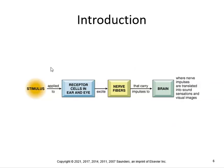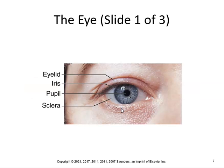Obviously it's more complicated — when you take anatomy and physiology, you'll go into all the steps. But for now, that's a pretty basic understanding of how the eye and the ear work. Here's the eye: the eyelid, the iris, the pupil, and the sclera. The sclera is the white part. The pupil is what dilates and constricts — it opens and closes. The iris is your colored part, so if you have brown, blue, or green eyes, that's the iris. The eyelid is there to protect you. Eyebrows are there to protect sweat from going into your eyes.